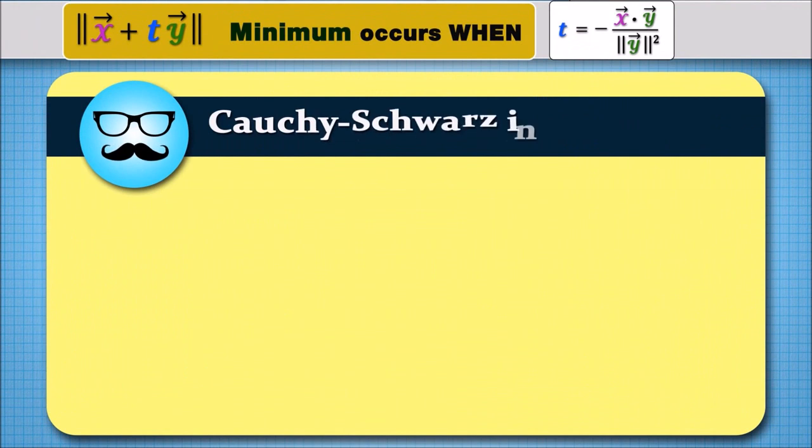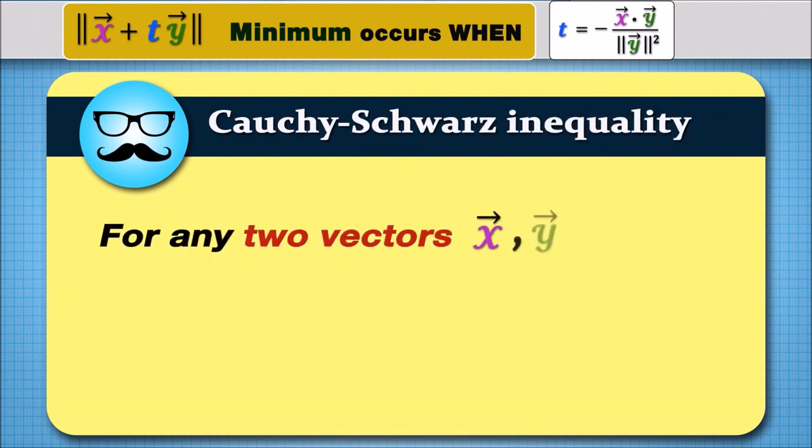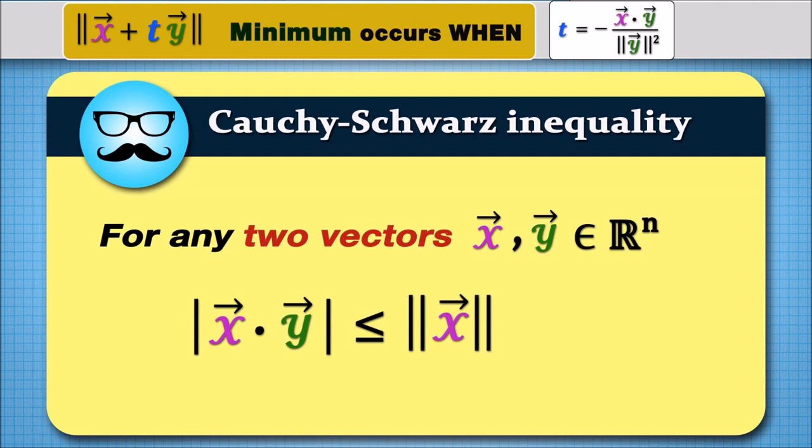Theorem: Cauchy-Schwarz inequality. For any two vectors x and y in R^n, the absolute value of x dot y is less than or equal to the norm of x times norm of y.